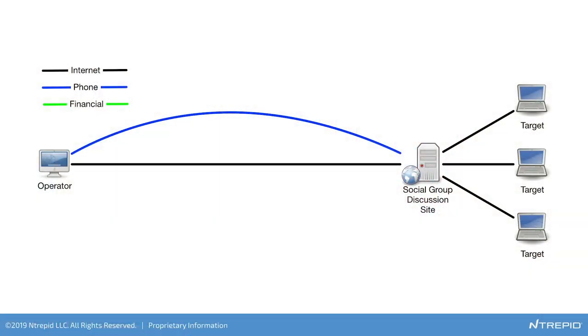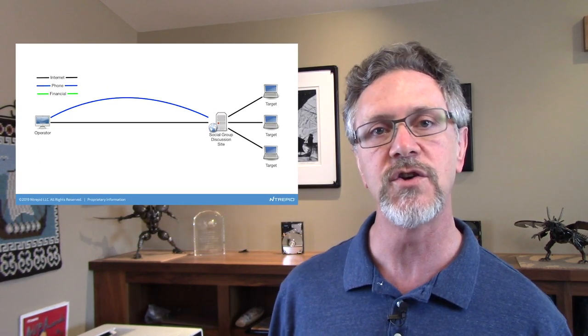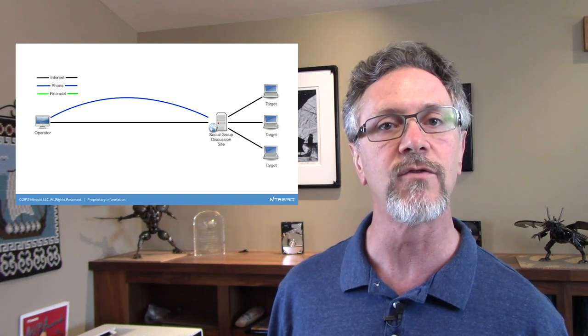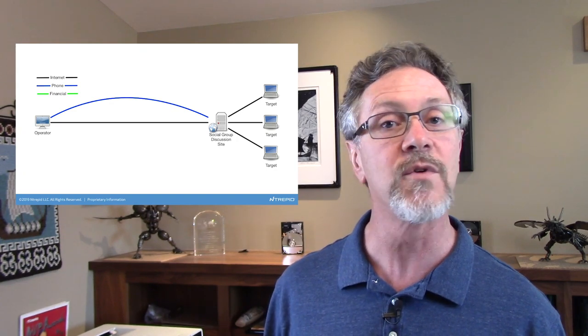In this case, that'll be the people in the discussion group we're trying to monitor. In this first diagram, we're looking at an operator going out and conducting this operation directly without using any kind of managed attribution solution whatsoever — making a direct connection to the social media platform right from their computer. There's also a phone link to the social media organization, which is the SMS number used for multi-factor authentication. Often, you need a unique real cell phone to get that confirmation text before any of these sites will allow you to set up a new account.